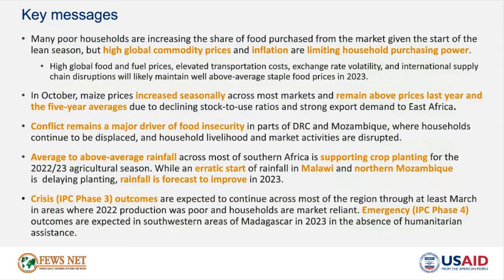Looking at the key messages across the region, with the start of the lean season, many poor households are increasingly reliant on markets for food, but high global commodity prices and inflation are limiting household purchasing power. Well above average staple food prices are also likely to be maintained throughout the outlook period, due to elevated transport costs, high global commodity prices, exchange rate volatility, and international supply chain disruptions.